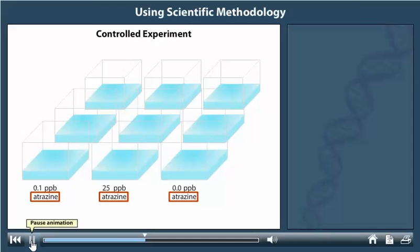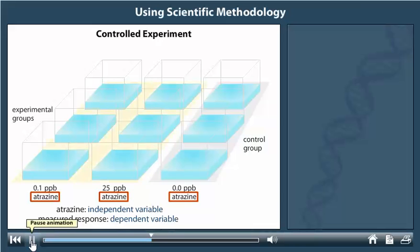Atrazine is considered the independent variable, and the measured response from the frogs will be the dependent variable. The unmanipulated set, with no atrazine added, is the control group in this experiment, and the others are the experimental groups.